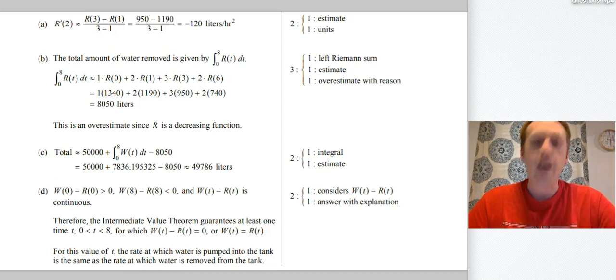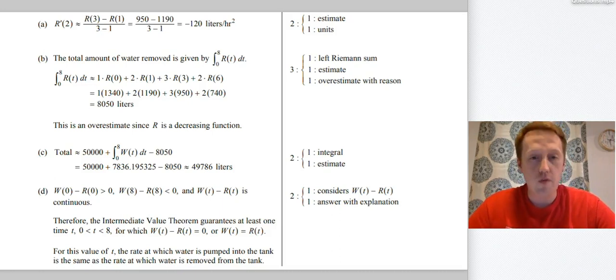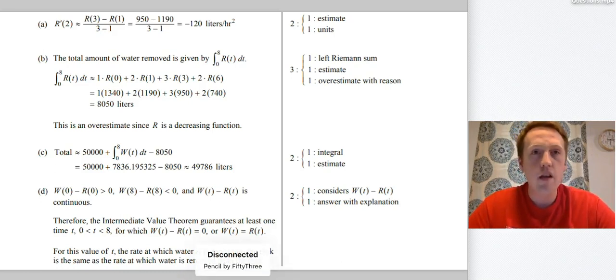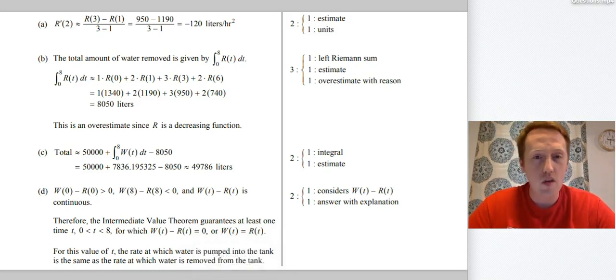R prime of two. We estimate with a derivative and we get negative 120 liters per hour squared. Now I want to point out you get two points for this. One point is for the estimate. One point is for the units. Sometimes you just get one point. It's the answer with the units. And if you miss the units, you miss the point. So make sure you're careful about that.